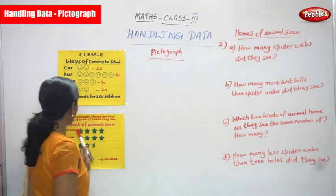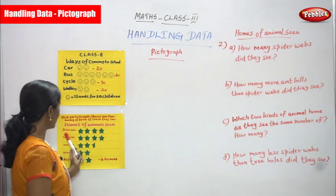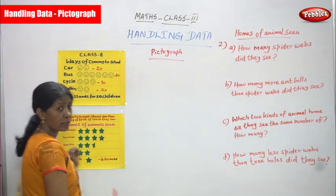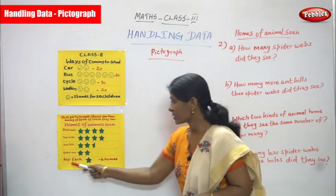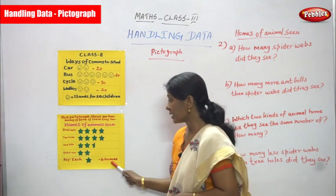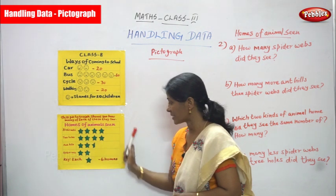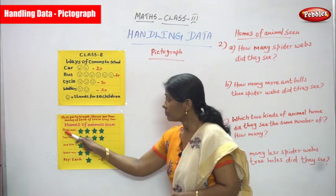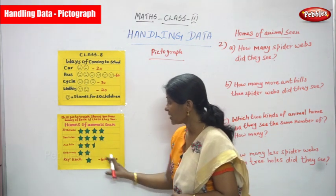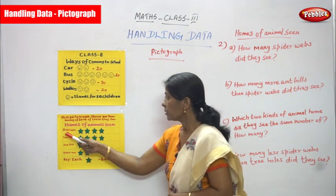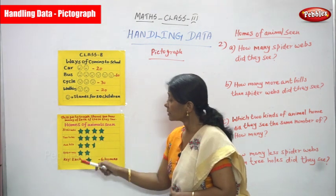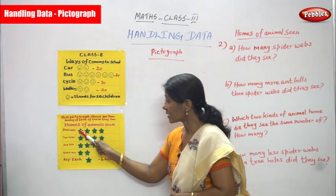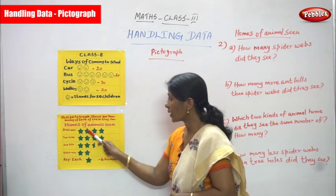Now we are going to see the second sum — homes of animals seen. So bird's nest, one star, two stars, three stars, four stars. The key is: each star represents six animal homes. This pictograph shows the six animal homes they have seen.